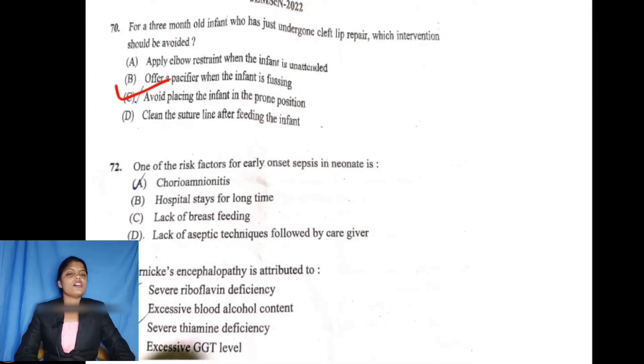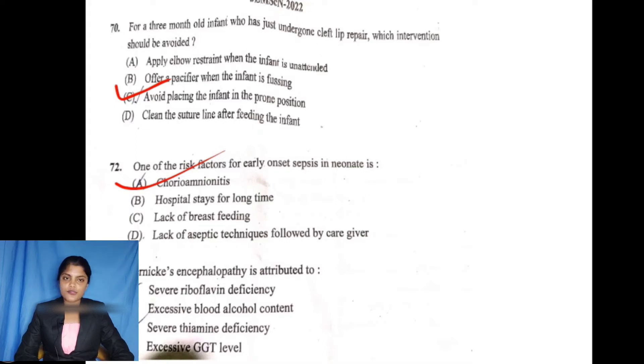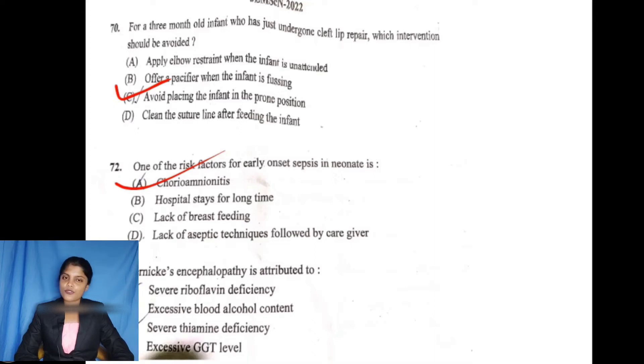One of the risk factors for early sepsis: Option A is correct. Option B is hospital stays for a long time. Option C is lack of breastfeeding. Option D is lack of accepted technique of the caregiver. There is excessive timing deficiency, then there is option C.